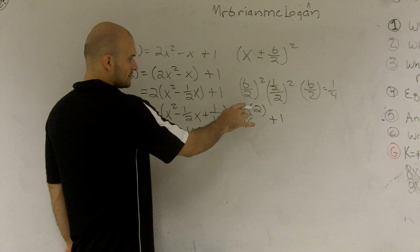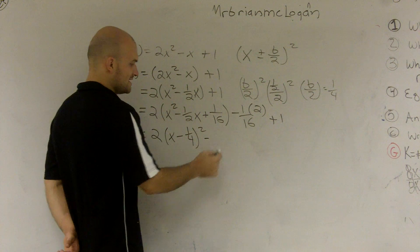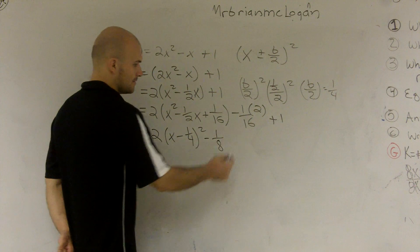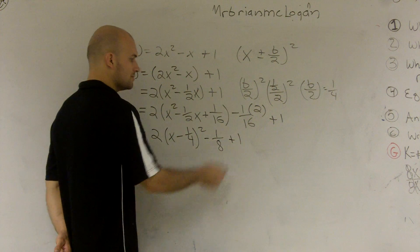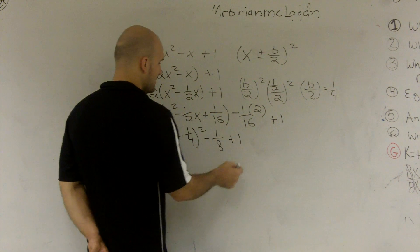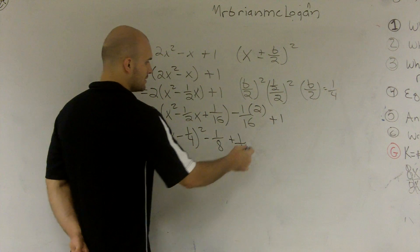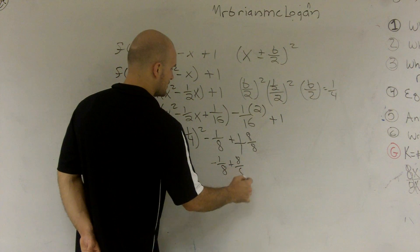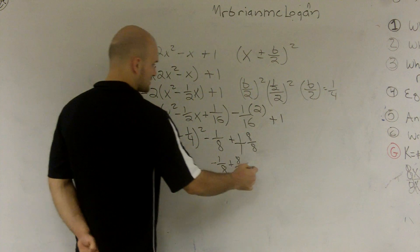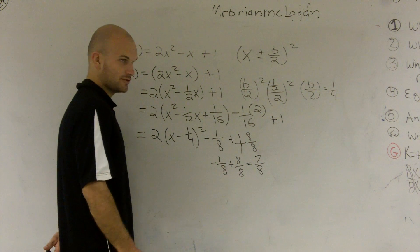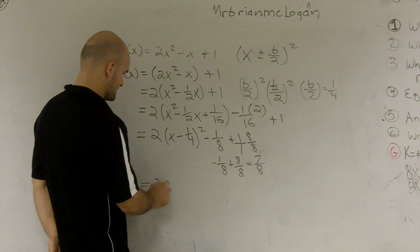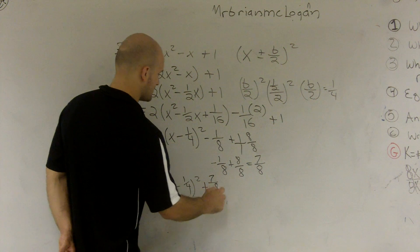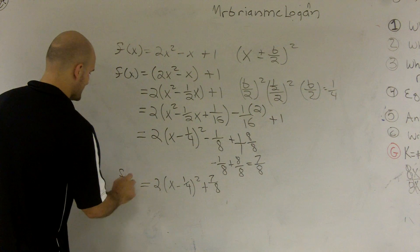Then over here, I have a minus 2 over 1 sixteenth can be reduced down to negative 1 eighth. Plus 1. Well, to add these two together, I'm going to multiply by, I got to put 1 over 1, multiply by 8 over 8, so I get a negative 1 eighth plus 8 over 8. So this is going to give me 7 eighths, if I do my math correct. f of x equals 2 times x minus 1 fourth squared plus 7 eighths. And that would be completing the square.